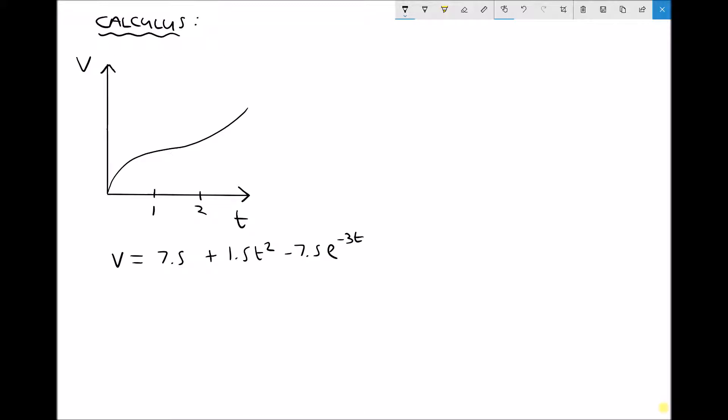So this time in the top left hand corner we have a velocity time graph. We have time on the x axis and velocity on the y axis. And we could use this graph to find a number of things.